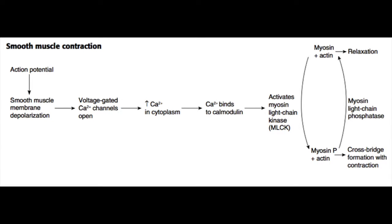Smooth muscle is a little bit different. You have the same initial process going on, where an action potential spreads down a nerve and reaches the motor end plate. Just like in skeletal muscle, it causes opening of voltage-gated calcium channels and calcium enters into the cytoplasm of the muscle fiber, but at this point things get a little bit different from skeletal muscle.